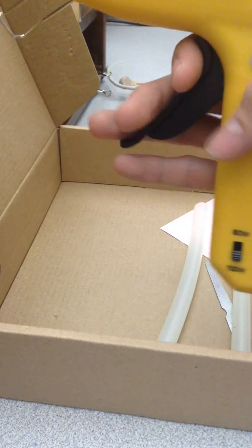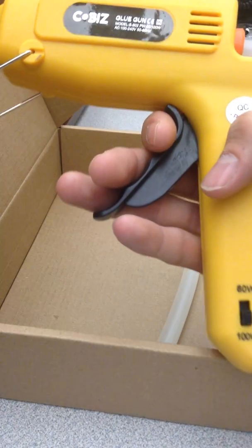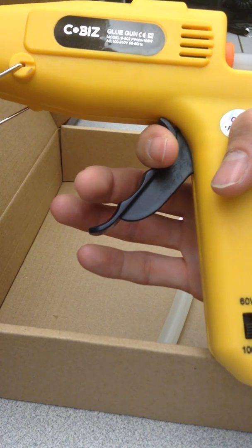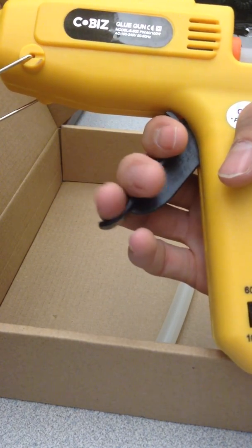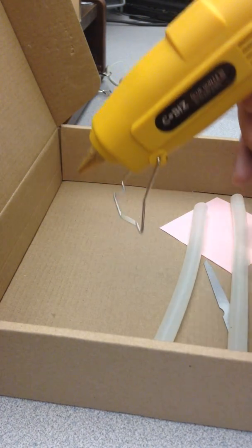You can also see that there's this trigger, and I really love this trigger because most hot glue guns that I've used has just a little bit of a trigger. Sometimes you can get two fingers on it, but this one you get all three on it, so you get a lot of power, and I think a little bit better control.